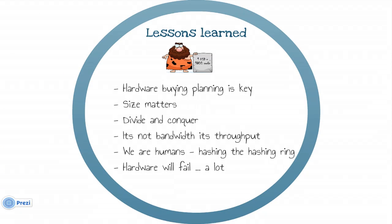Here are our lessons learned. Hardware buying and planning is key: good service support reduces response times, better hardware, solid-state drives, enterprise-grade SATA drives, SATA DOM modules for the OS, and better network interfaces all matter. Size matters — multiply the amount of drives to get better IOPS balance. Divide and conquer — isolate parts of your services to increase performance. It's about throughput, not just bandwidth — we don't have a bandwidth issue, it's all about throughput. Be vigilant about ring file consistency — ensure you have the same ring files in all nodes across your cluster. And hardware will fail, and it will fail a lot — know what you need to do in case of failures.